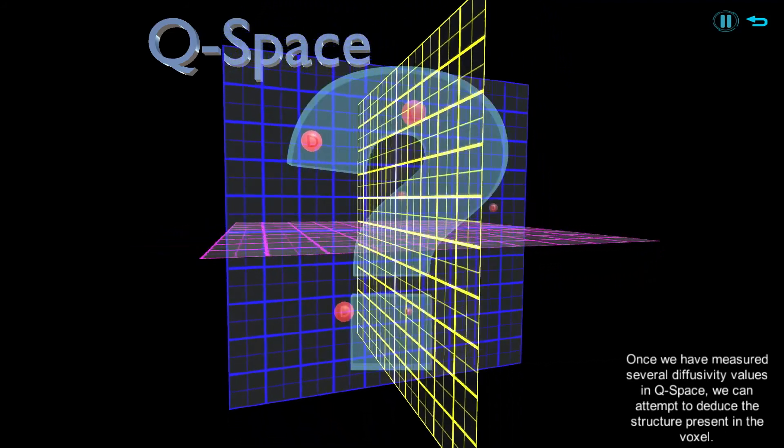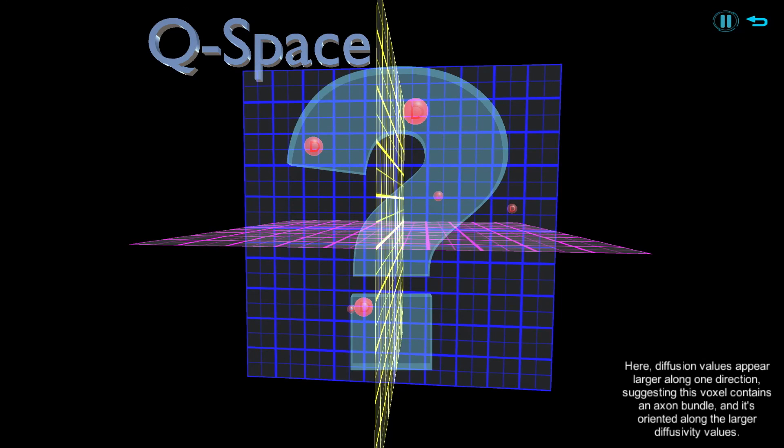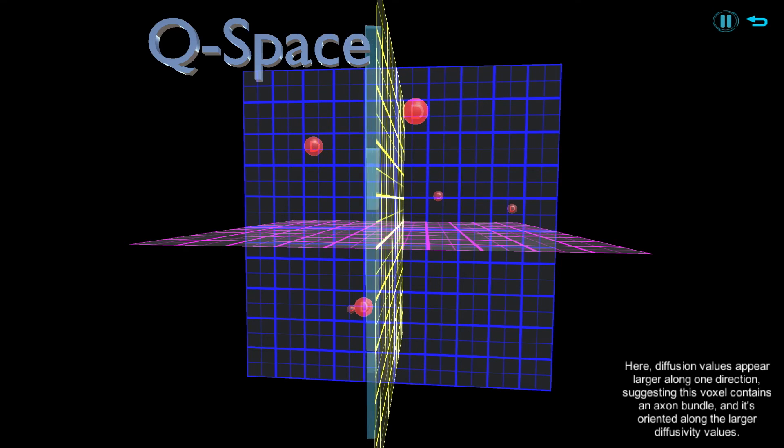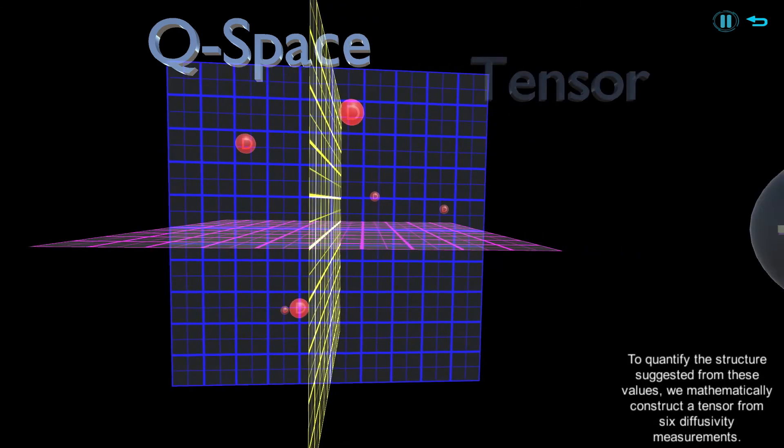Here, diffusion values appear larger along one direction, suggesting this voxel contains an axon bundle and it's oriented along the larger diffusivity values.